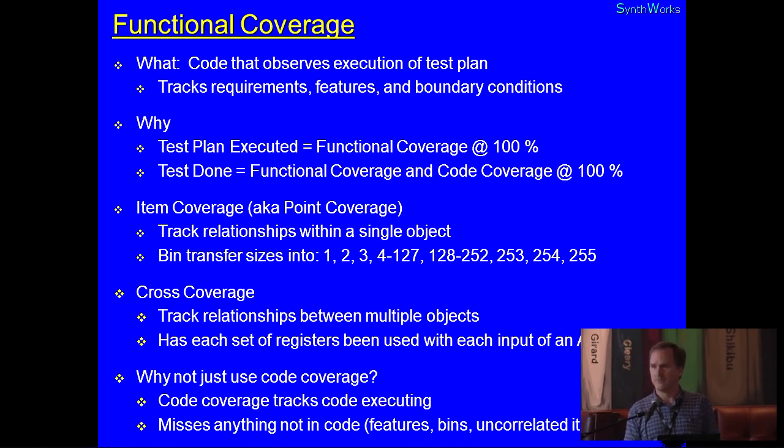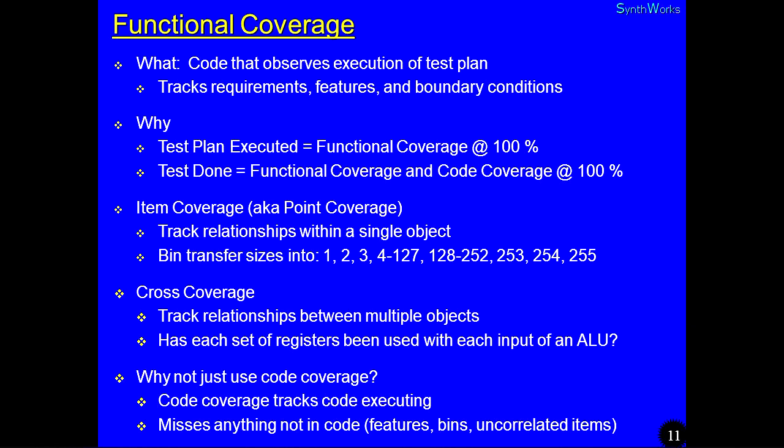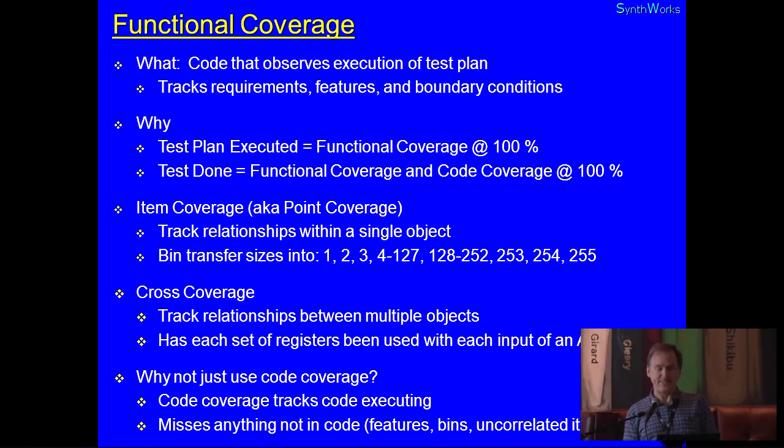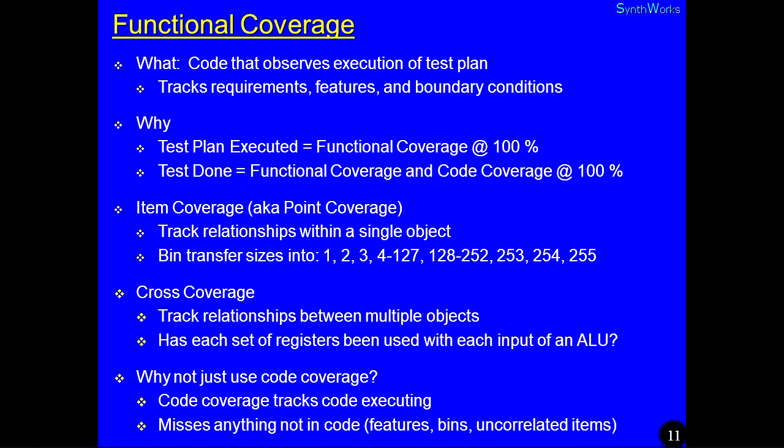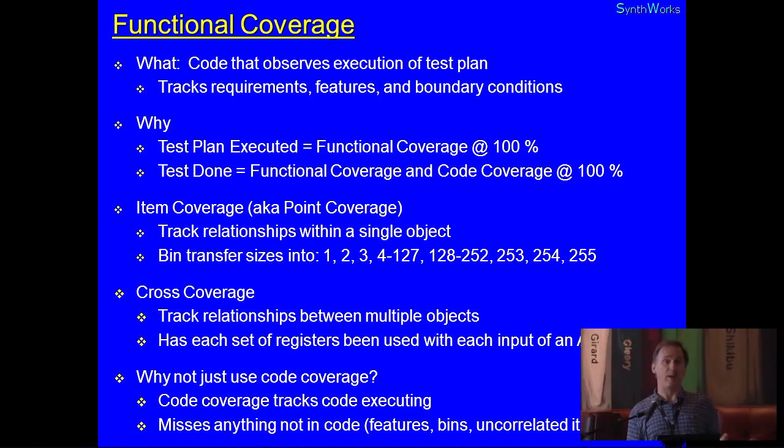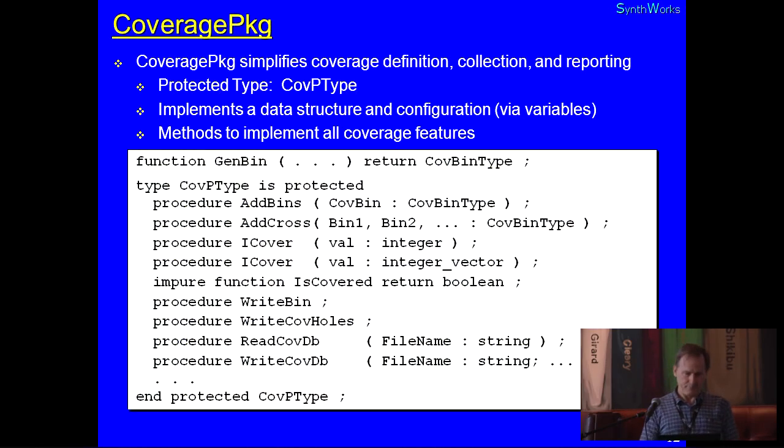Why not just code coverage? Well, code coverage tracks code that's been executed. But it misses things that are not in code. The binning, the correlation between different objects does not happen in your code. Also, code coverage, by the way, is optimistic. You run code coverage in VHDL. Think of a process with a sensitivity list. It runs every time something in its sensitivity list changes. That could be multiple times in a clock period. The only one that's relevant is the last one that ran during that clock period. Now, code coverage certainly is valuable because it tells you you didn't, if you don't get 100%, it says you didn't do something. But if you get 100%, that's not saying you did everything.